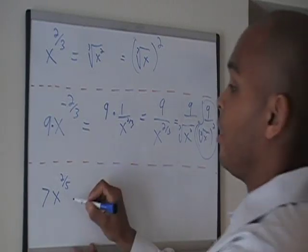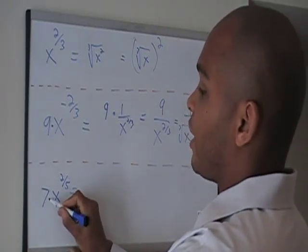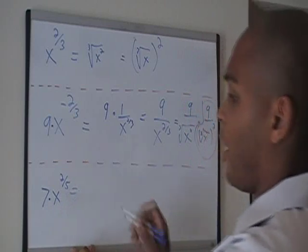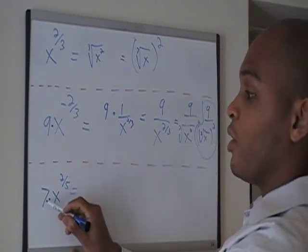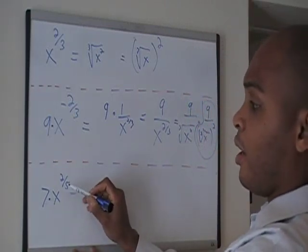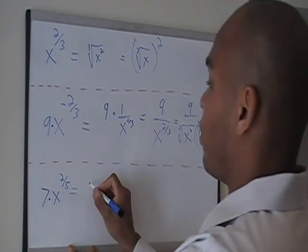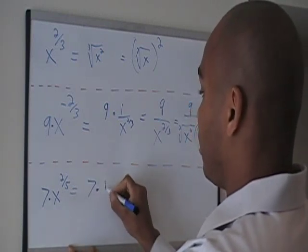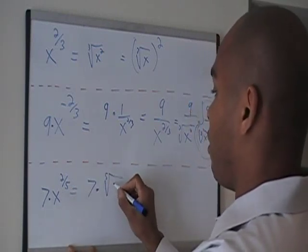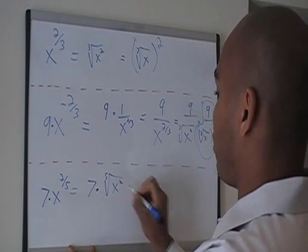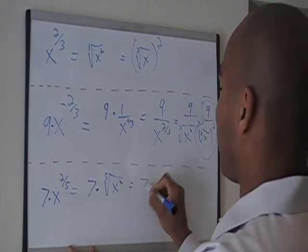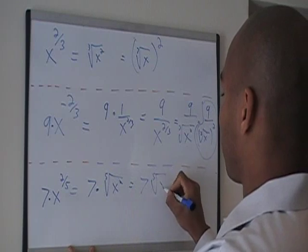Last but not least, again, this 7 is really saying 7 times x to the positive 2 over 5. So the 7 is not being raised to the 2 over 5 power. So we have 7 times the 5th root of x squared, which equals 7 times the 5th root of x squared.